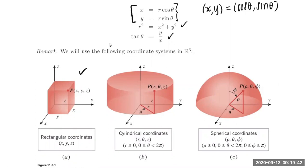We will restrict our radius to non-negative values. This is different from polar coordinates where we were allowing negative radii. We will also restrict theta between zero and two pi, strictly less than two pi. So we're not going to consider negative theta values or going around multiple times.